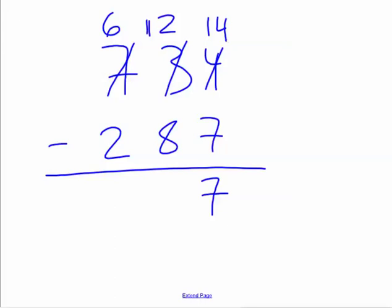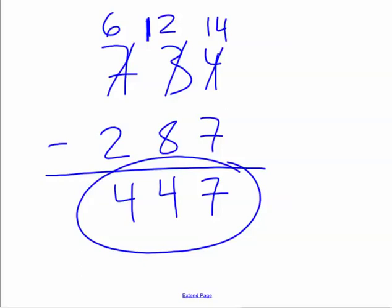Now this is no longer 2 tens, but 12 tens. So 12 tens minus 8 tens is 4 tens. And then 6 hundreds minus 2 hundreds is 4 hundreds. My final solution is 447.